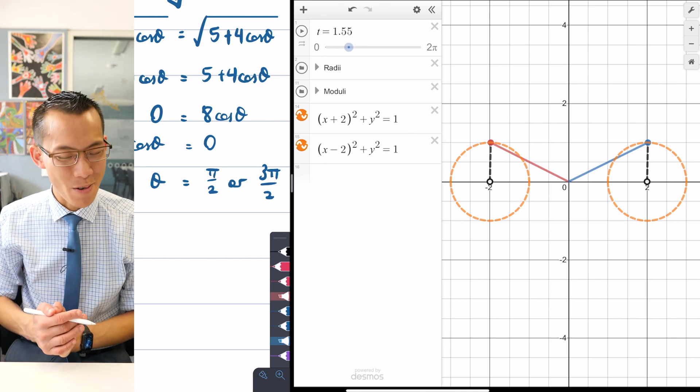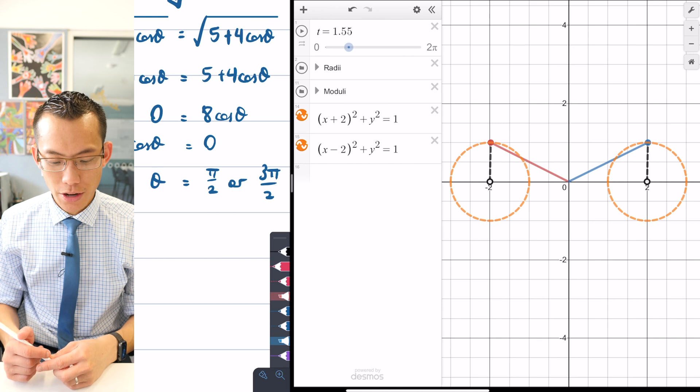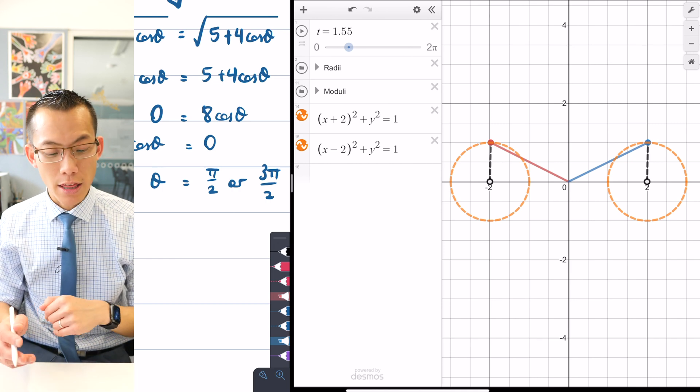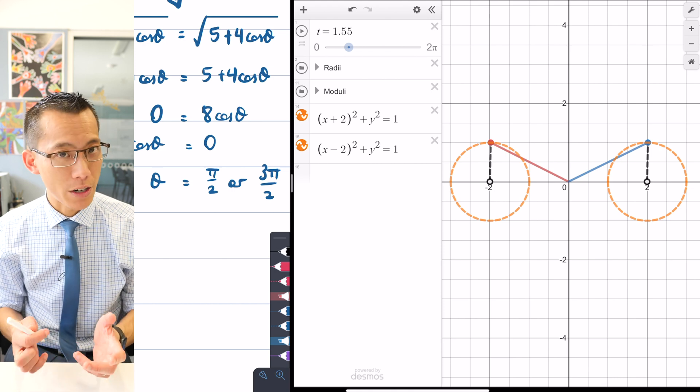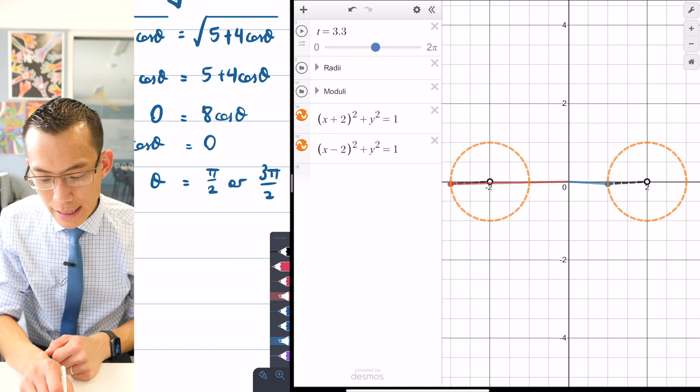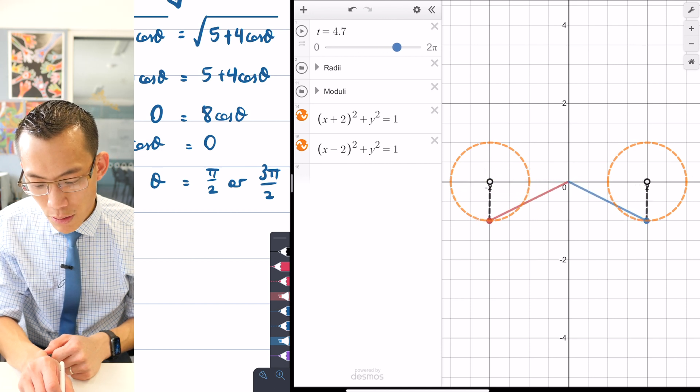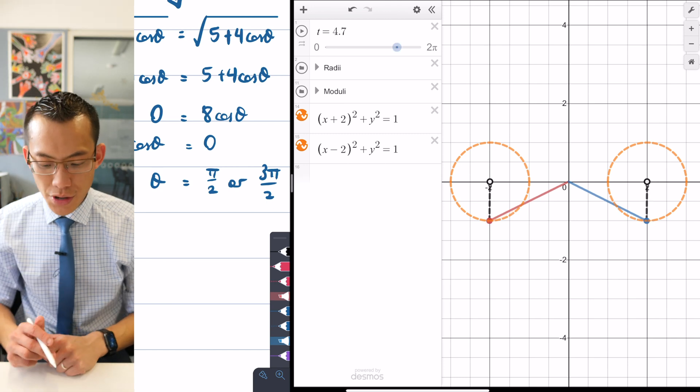So you've got your blue and your red magnitudes there. This is for my θ = π/2 situation. If I then go and look at the 3π/2 situation, maybe you've already worked out from our previous exploration of the different angles. As I go around to 3π/2, you can see you're going to get exactly the same magnitudes. It's just that they're on the bottom half of the complex plane, not the top half.